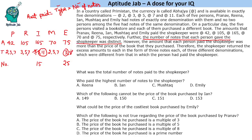With denominations 3 and 11 assigned, we look at 105. Dividing by 7 also gives 15, which is taken. So this person paid in denomination 5 and gave 21 notes. Now we are left with denominations 2 and 7 for the amounts 42 and 70. If we assign 7 to the person who paid 70, that gives 10 notes. But assigning 7 to the person who paid 42 gives 6 notes, and 2 to the person who paid 70 gives 35 notes. This avoids the duplicate of 21, so the person who paid 42 used denomination 7 and gave 6 notes, and the person who paid 70 used denomination 2 and gave 35 notes.